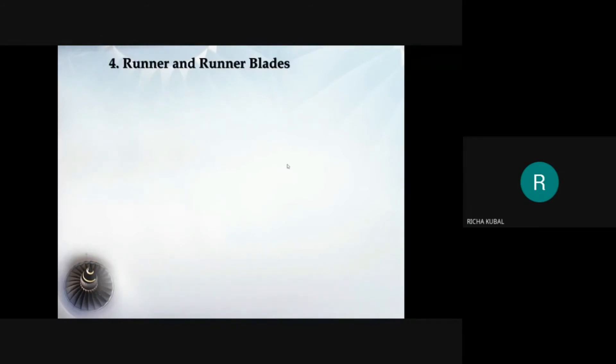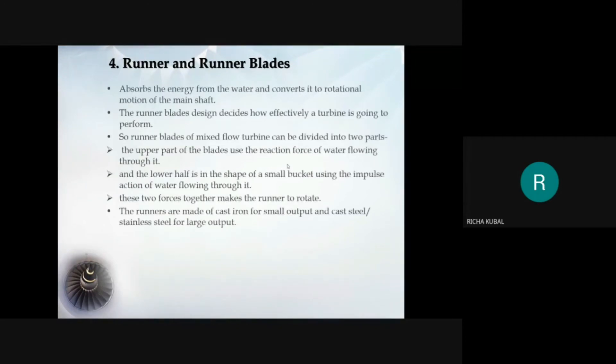Now runner and runner blades. The runner is connected to the main shaft of turbine. The shaft may be horizontal or vertical and accordingly it is known as horizontal turbine or vertical turbine. The shaft is made up of steel and is supported in thrust bearings.